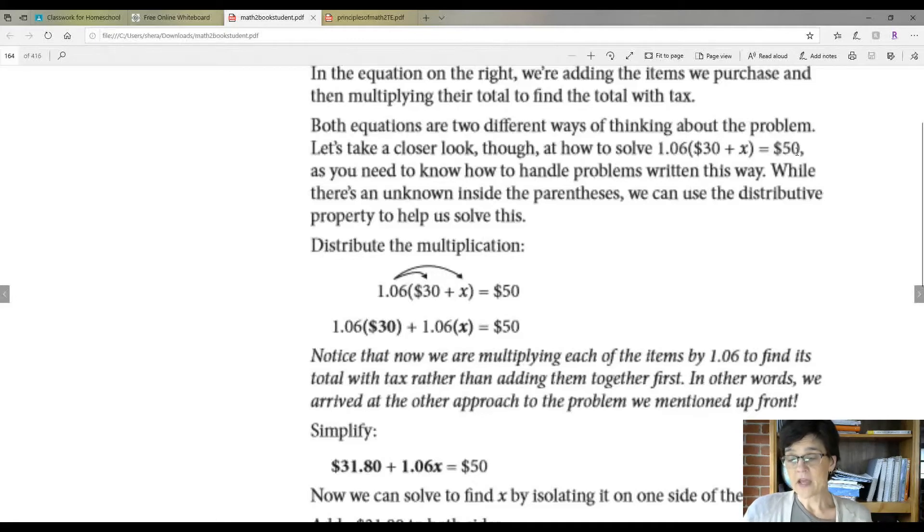In the equation on the right, we're adding the items we purchased and then multiplying their total to find the total tax. So both equations are two different ways of thinking about the problem. We'll take a closer look at this one right here, this problem. These are the ones that we need to know. This is similar to the one with the Fahrenheit and Celsius. So we're going to use the distributive property.